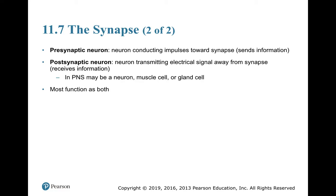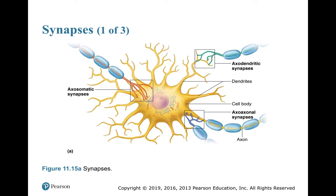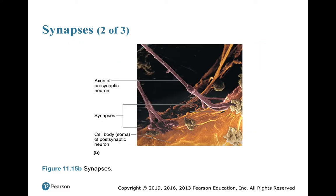Most neurons are not just presynaptic or just postsynaptic — most are presynaptic for at least one synapse and postsynaptic for others. We can have axosomatic synapses, axodendritic synapses, and axoaxonal synapses, where one axon is connected directly to another axon. So multiple presynaptic neurons can all converge on a single postsynaptic neuron.